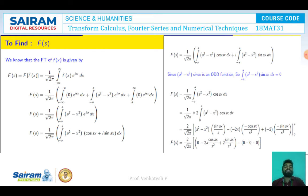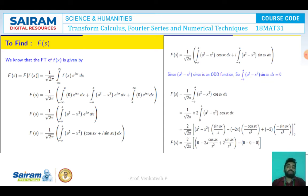Expanding this, F(s) = (1/√(2π)) [ ∫_{-a}^{+a} (a² - x²) cos(sx) dx + i ∫_{-a}^{+a} (a² - x²) sin(sx) dx ]. Since (a² - x²) sin(sx) is an odd function, the second integral equals 0. Therefore F(s) = (1/√(2π)) ∫_{-a}^{+a} (a² - x²) cos(sx) dx, and since this is an even function, it becomes (2/√(2π)) ∫₀^a (a² - x²) cos(sx) dx.